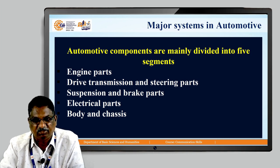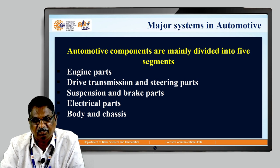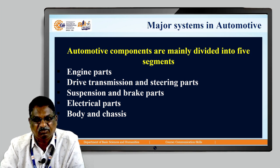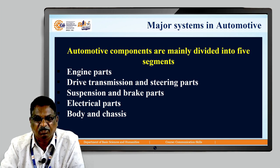Major systems in automotive: automotive components are mainly divided into five segments — engine parts, drive transmission and steering parts, suspension and brake parts, electrical parts, and body and chassis.